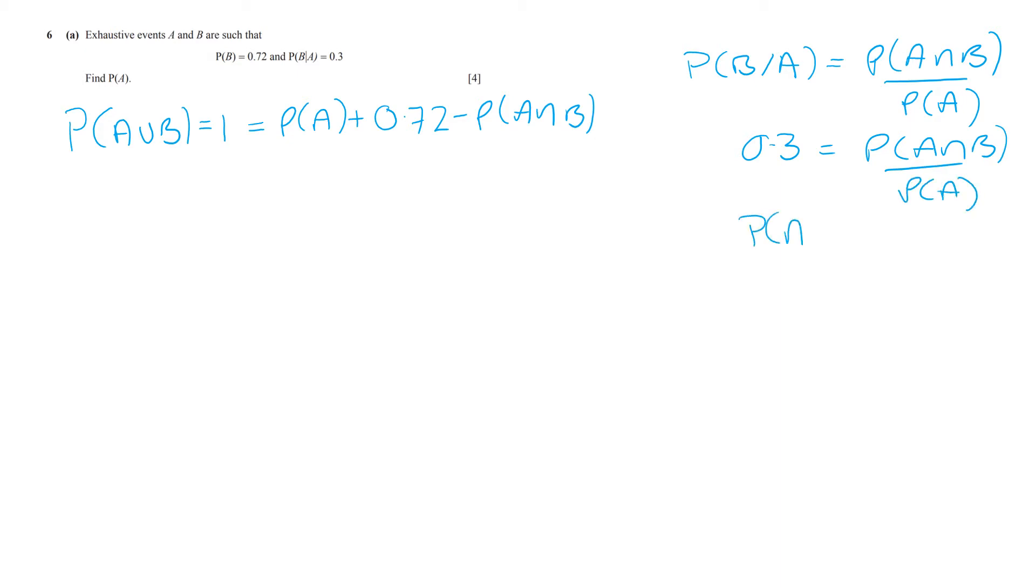And multiplying gives us that the probability of A and B is 0.3 times the probability of A. So if I go back to my original equation, 1 equals the probability of A plus 0.72 minus 0.3 times the probability of A. 1 minus 0.72, which would give us 0.28, will equal 0.7 times the probability of A.